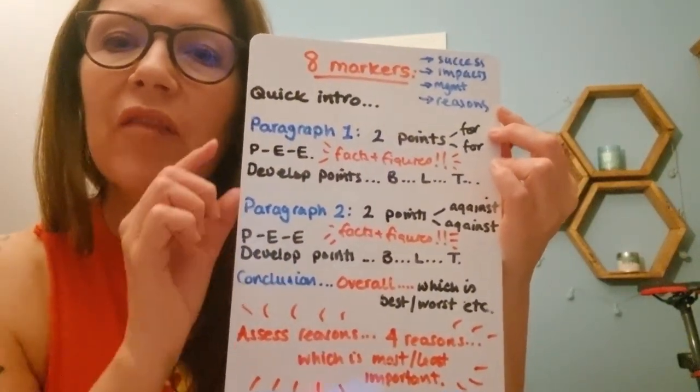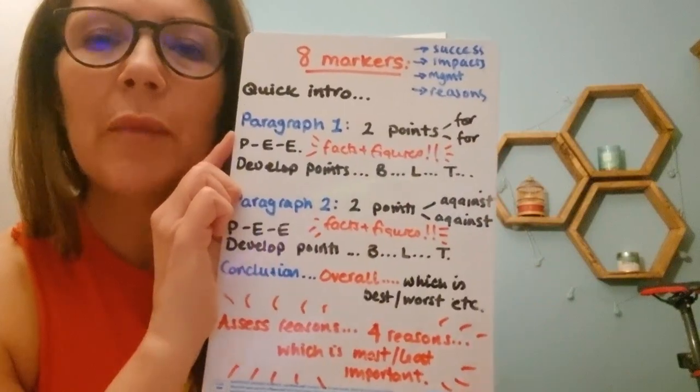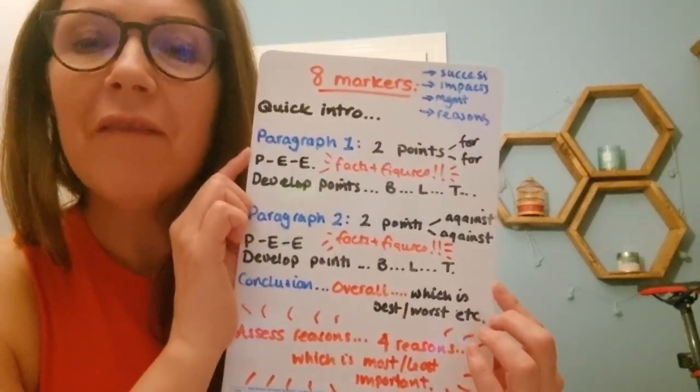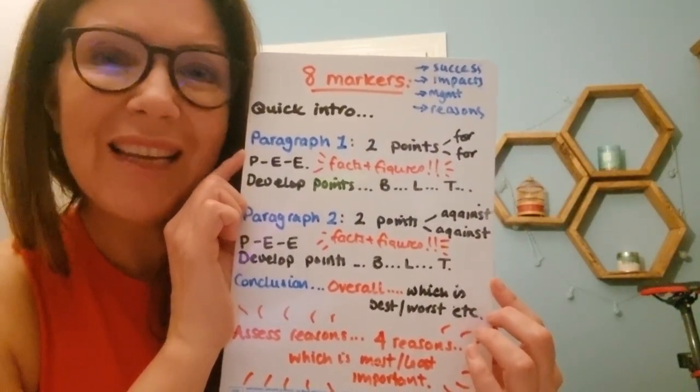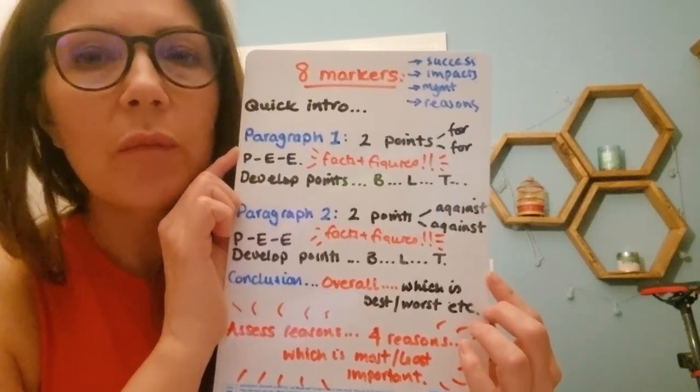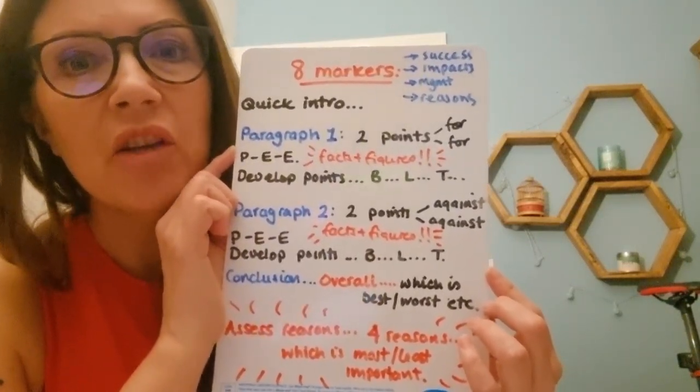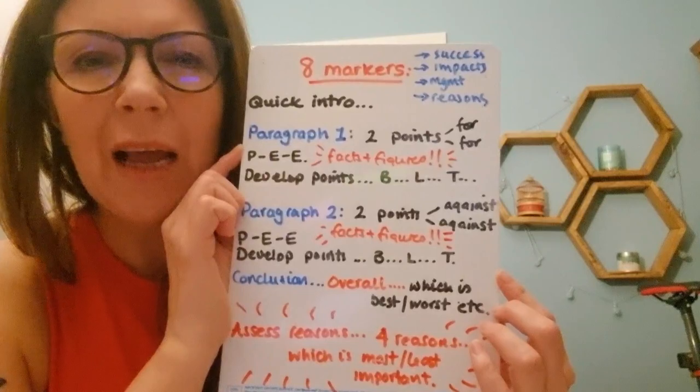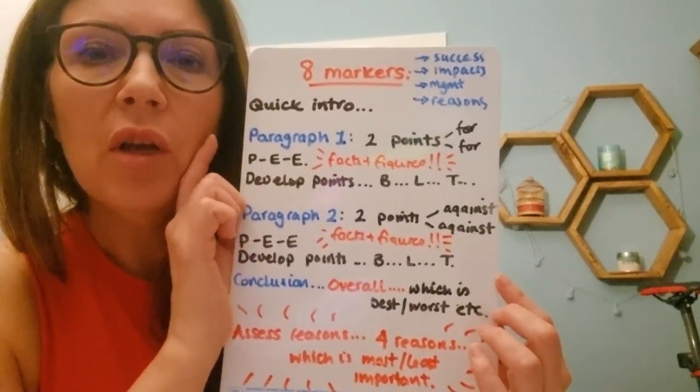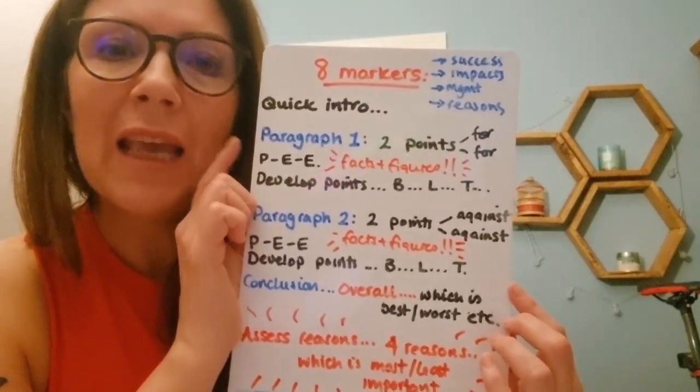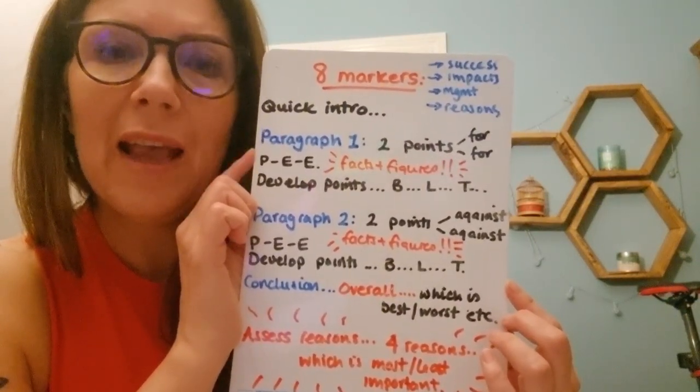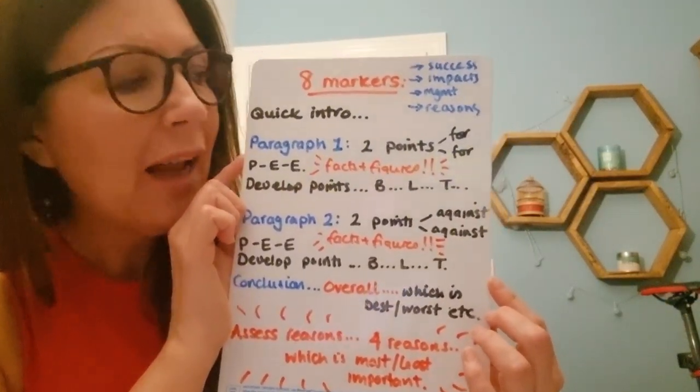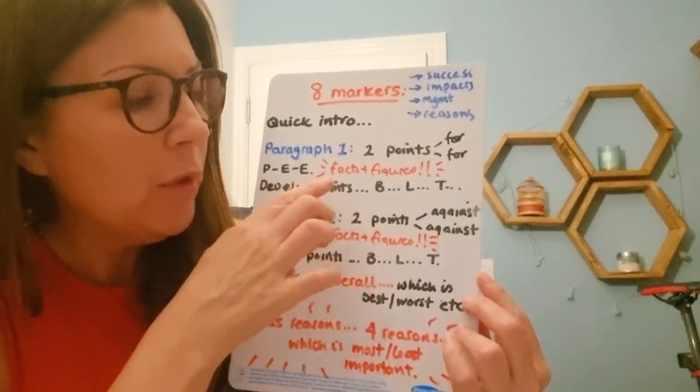Then you need three main paragraphs. First paragraph one is going to be two points that are going to be for the question. So assess the success of top-down strategies in an emerging country. It could be the dam that you're doing, the Sardar-Sarabar dam. So two fours. So PEE, follow that structure, point, explanation, evidence, and make sure that you develop your points.